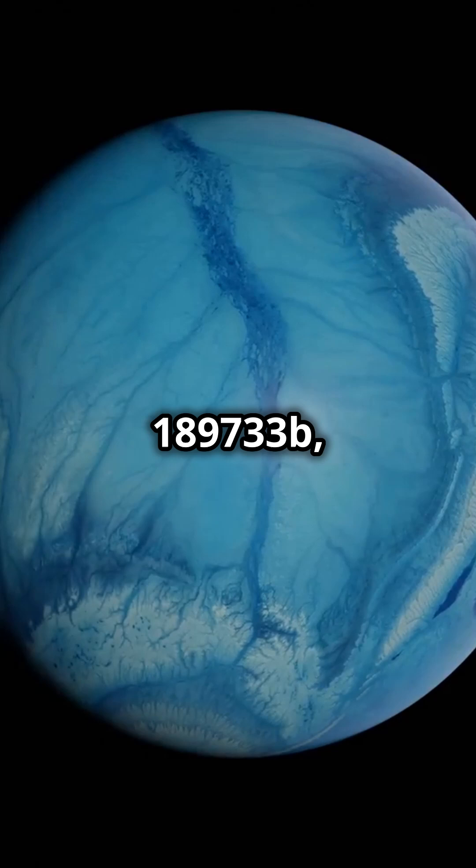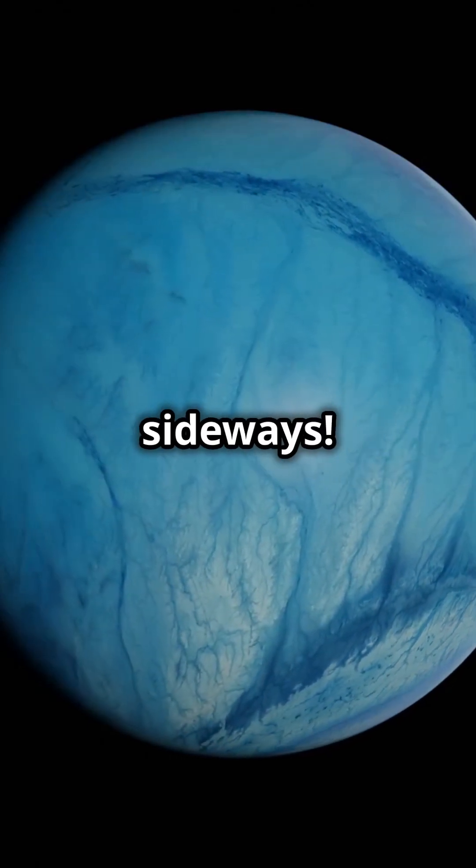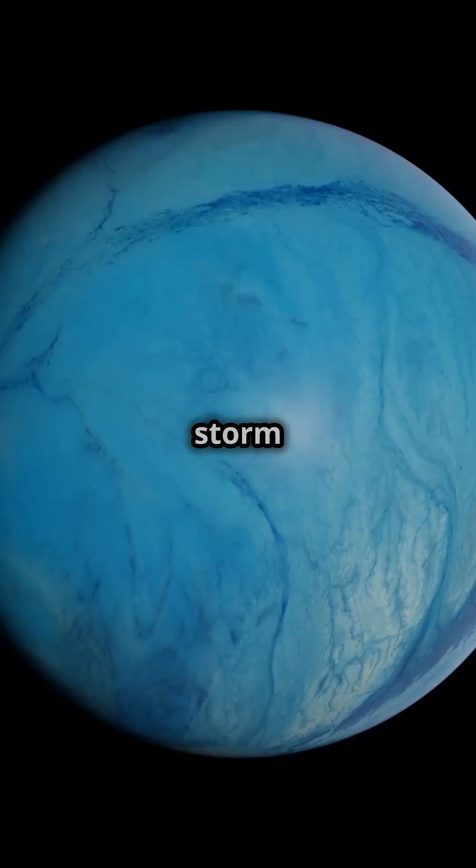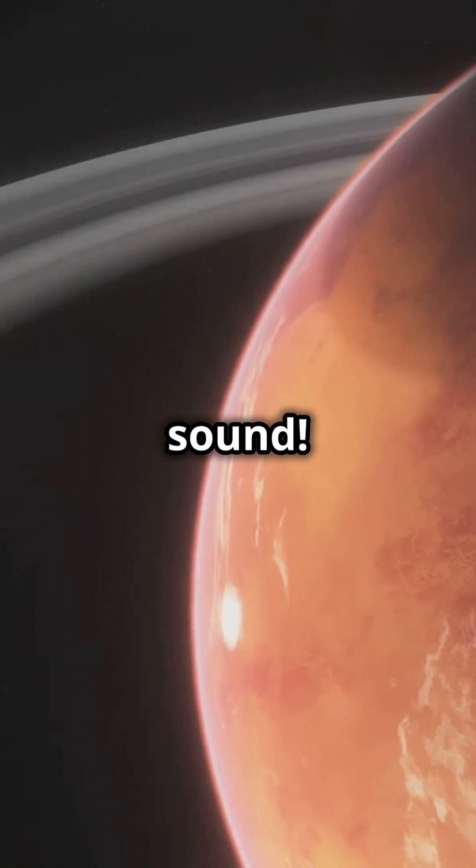This is HD 189733 b, a planet that rains molten glass, sideways. Imagine standing in a storm where the wind blows at 5,400 miles per hour, seven times the speed of sound.